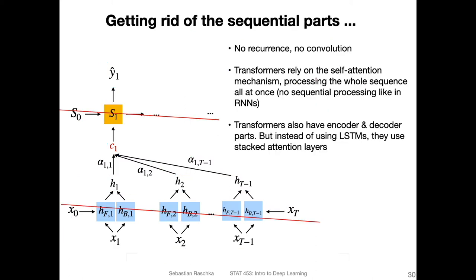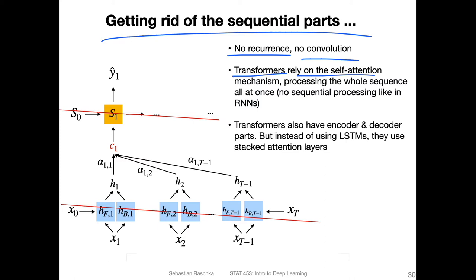Now we are going to remove all sequential parts from that model — no recurrence, no convolution, nothing specific for processing input sequentially. We are working towards the so-called transformer model, which only relies on the self-attention mechanism. The self-attention mechanism processes the whole sequence all at once.